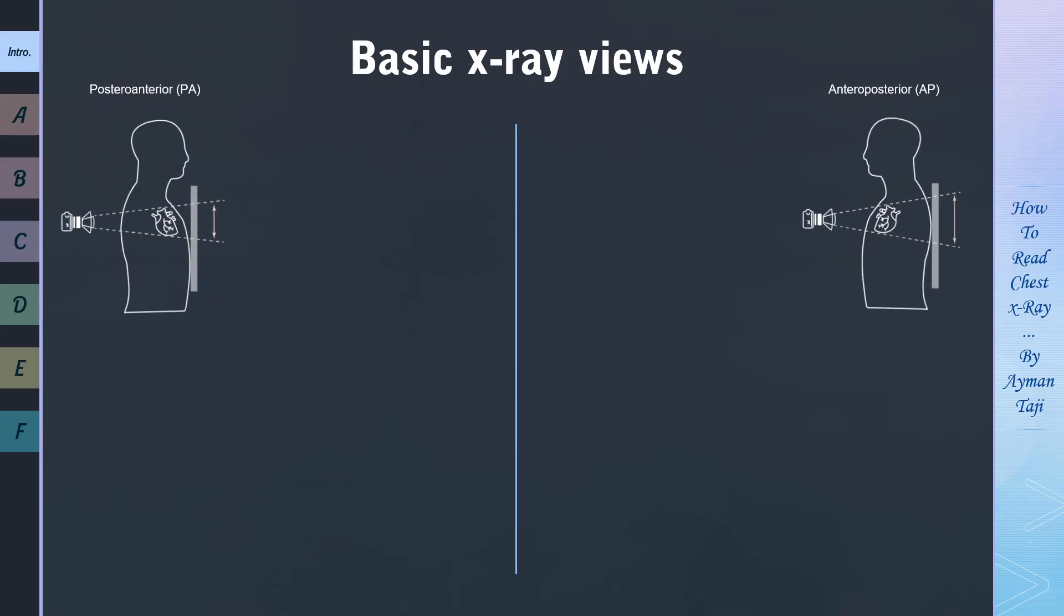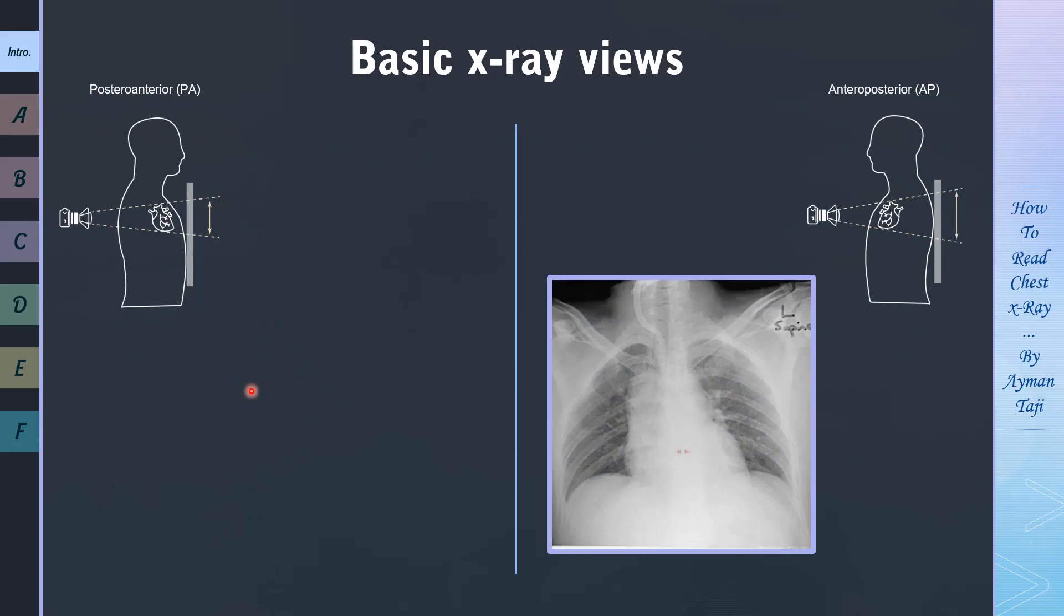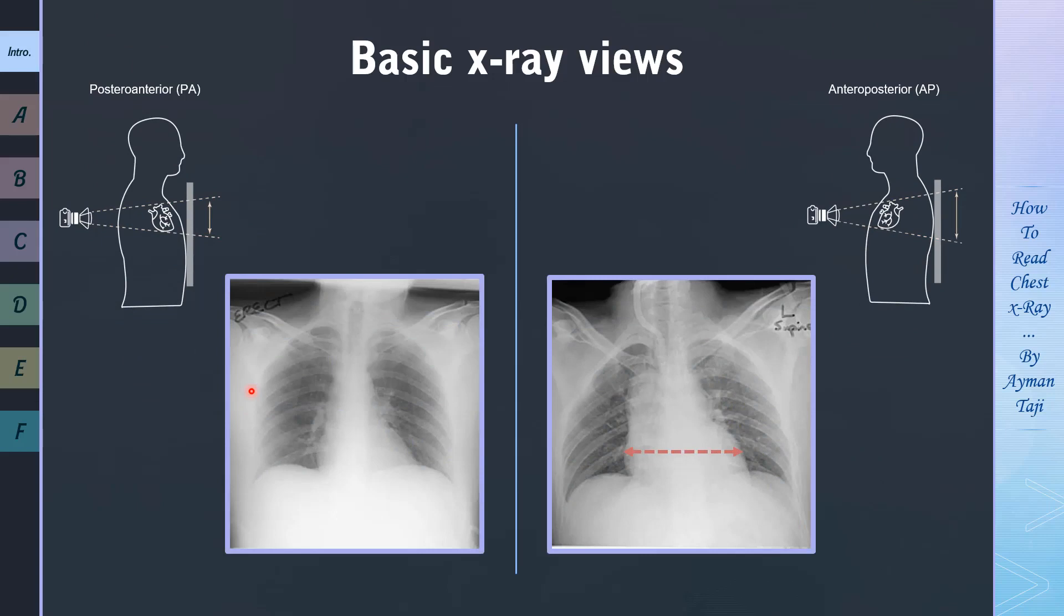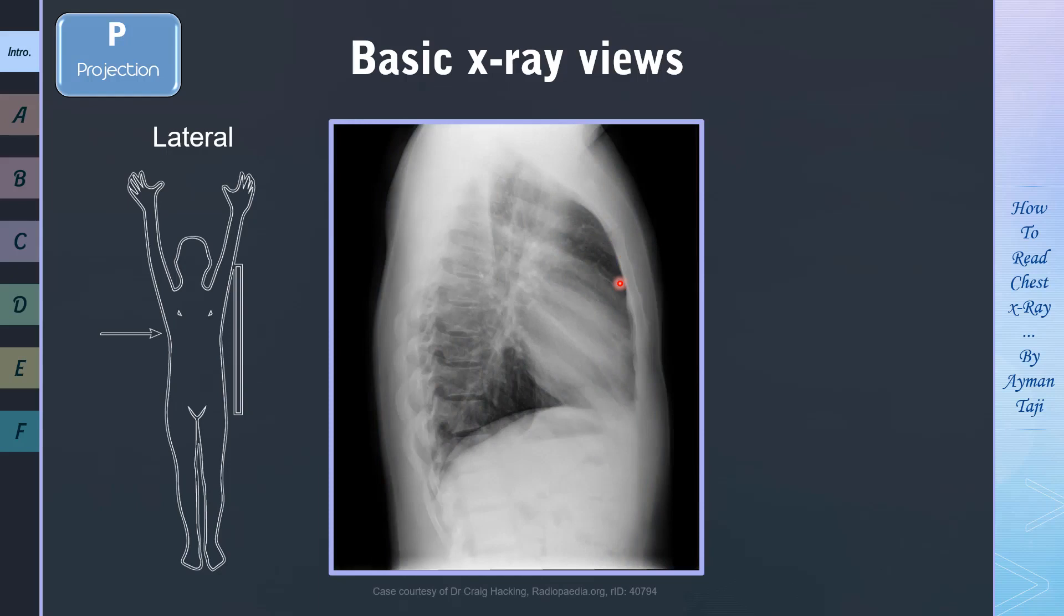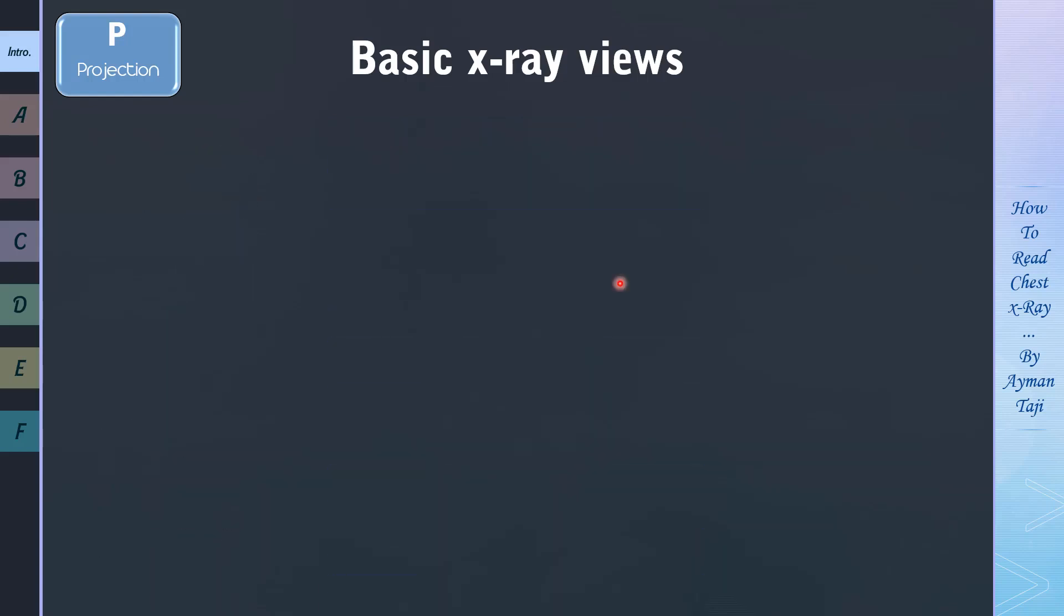And here's an example. The cardiomediastinal contour is significantly magnified on this AP film. And here's the PA film for the same patient, and we can see that the mediastinum appears normal. Now, there are other views of the X-ray beside PA and AP views, like the lateral view, in which the patient stands with both arms raised, and the left side of the chest pressed against a flat surface. And the result will be like this. Don't worry now about how to read this image. We'll come to this in details in the next lectures.